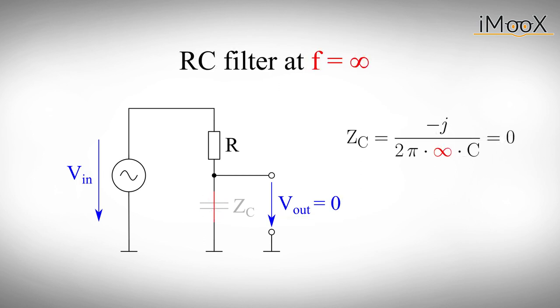For the other extreme, if the signal frequency is close to infinity, the impedance of the capacitor will drop to zero. We can therefore think of the capacitor as a short circuit. The output voltage is pulled to ground and will therefore be zero.